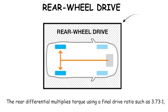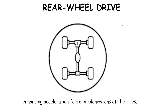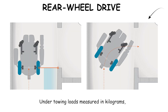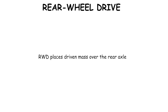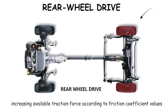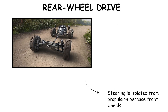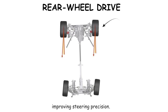The rear differential multiplies torque using a final drive ratio such as 3.73 to 1, enhancing acceleration force and kilonewtons at the tires. Under towing loads measured in kilograms, rear wheel drive places driven mass over the rear axle, increasing available traction force according to friction coefficient values. Steering is isolated from propulsion because front wheels handle lateral grip only, improving steering precision.